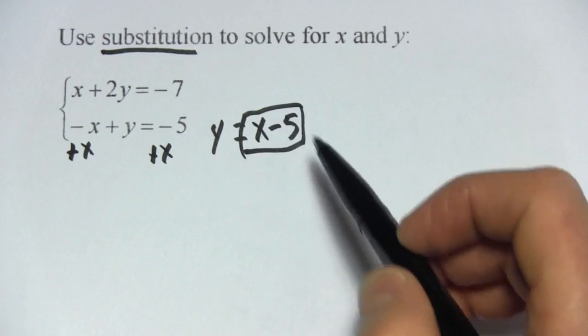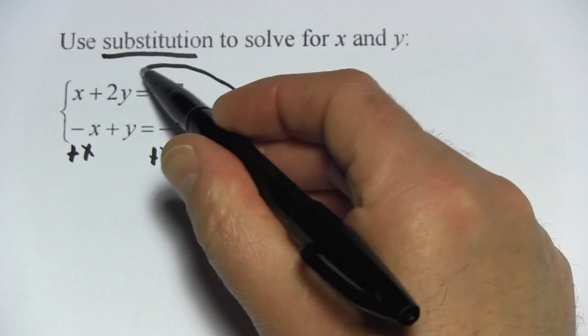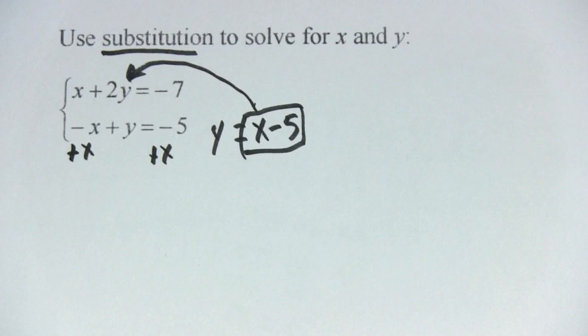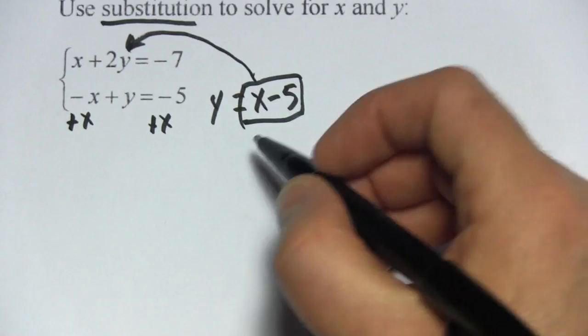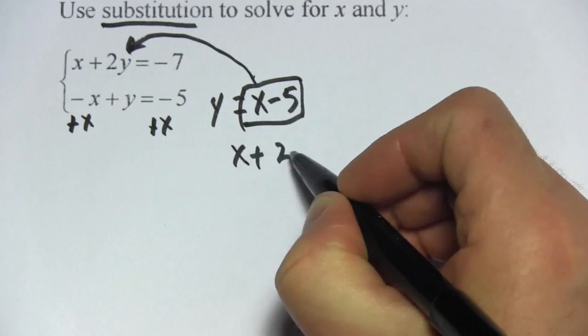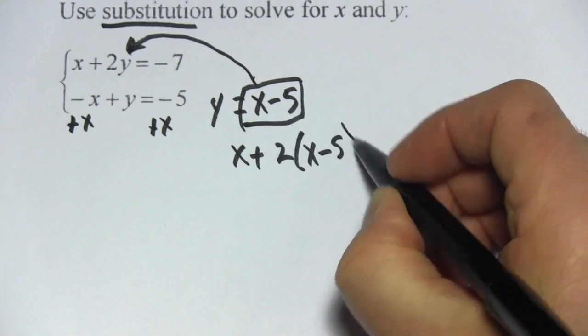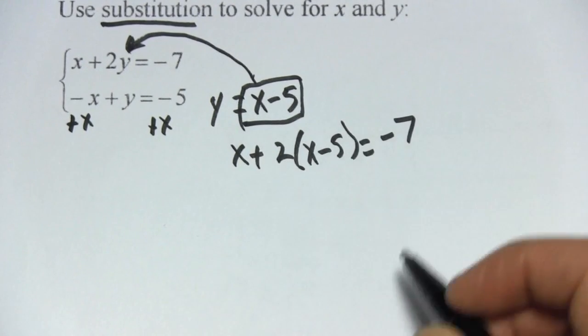I can take this value for y and substitute it in up here. So let's go ahead and do that. We would have x plus 2 times y, and our y now is x minus 5, equals a negative 7.